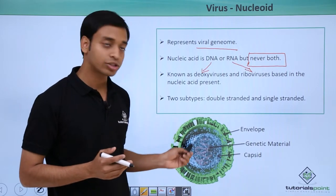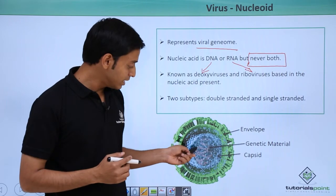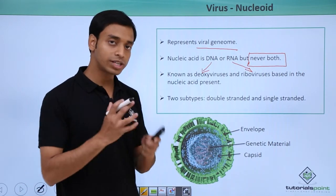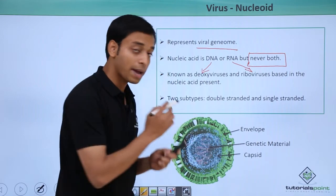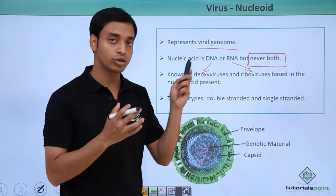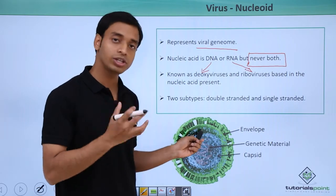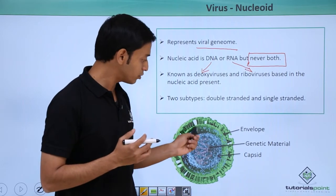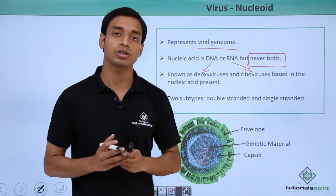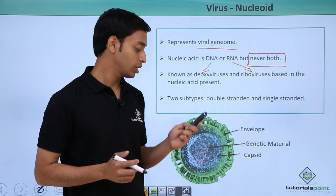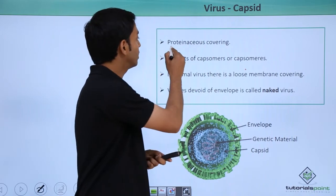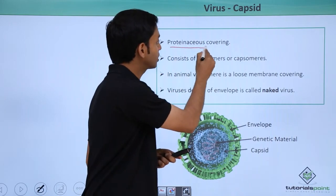This is a typical structure of a virus. You can see the inner reddish shaded structure is the genetic material. Outside this is the bluish covering which is the capsid — a proteinaceous covering. In some viruses there is an additional protective structure known as the envelope.